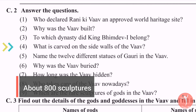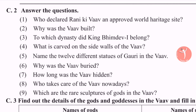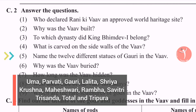Question 5: Name the 12 different statues of Gauri in Vav. There are 12 statues of Gauri namely Uma, Parvati, Gauri, Lalita, Shriya, Krishna, Maheswari, Rambha, Savitri, Trisanda, Total, and Tripura.